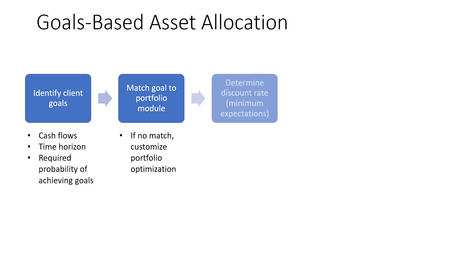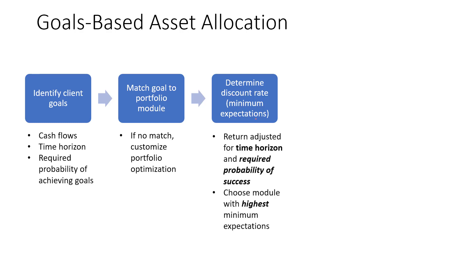Then the advisor will determine the discount rate, or what we call the minimum expectations, that is appropriate given the time horizon and the probability of success. This minimum expectations is not the average return or the median return. It is a return that is adjusted for time horizon and the required probability of success. Given multiple modules, the advisor will choose the highest minimum expectations.